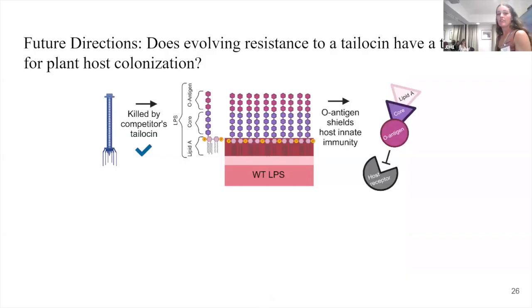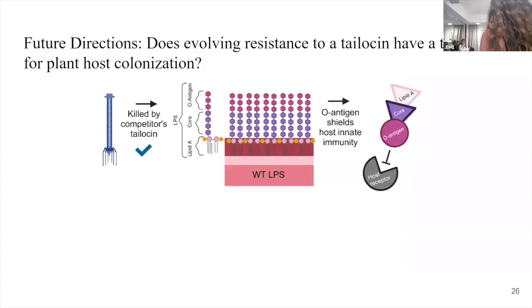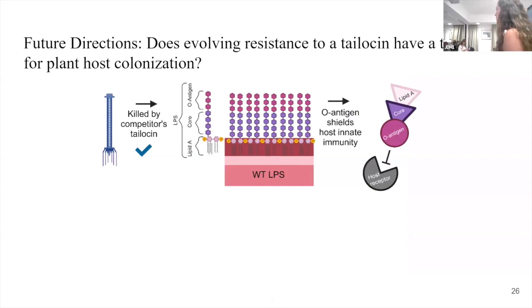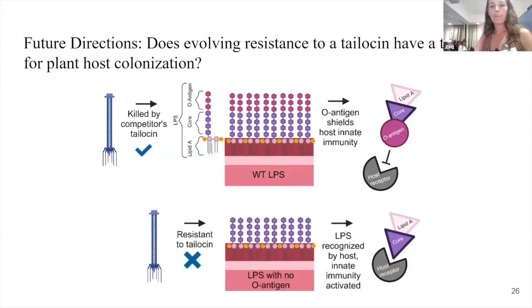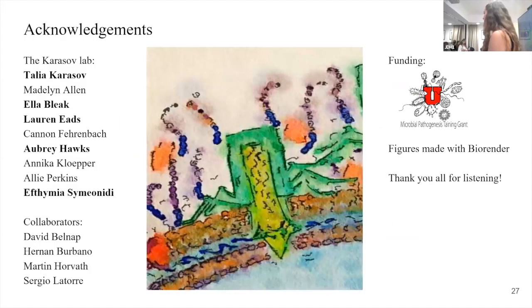In the future of my work, I've identified a few of the O-antigen receptors for these talosins, and I would like to determine if evolving resistance to talosins has a trade-off for plant host colonization. We know that the O-antigen in gram-negative strains often shields the bacteria from host innate immunity and aids in adhesion and virulence. So if the bacteria were to become resistant to a talosin, they would have to mutate their O-antigen, which would probably have a significant trade-off in their plant host. With that, I would like to thank my lab, my funding, and all of you for listening.